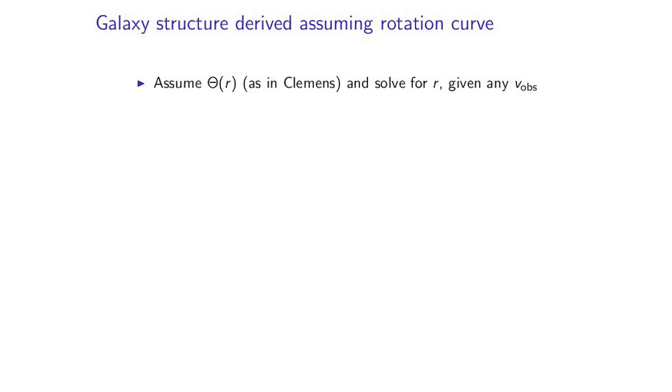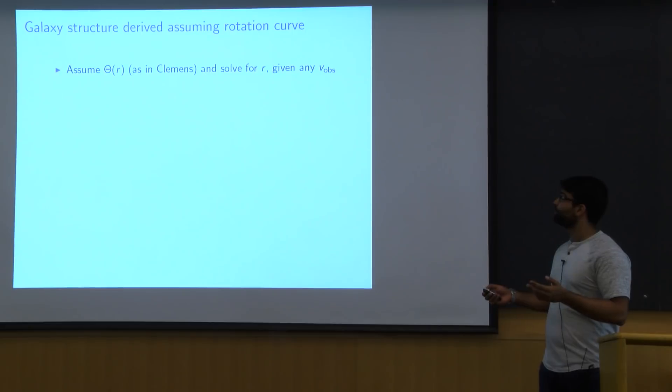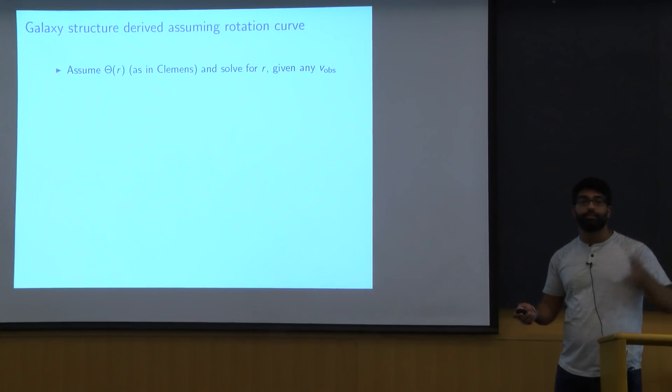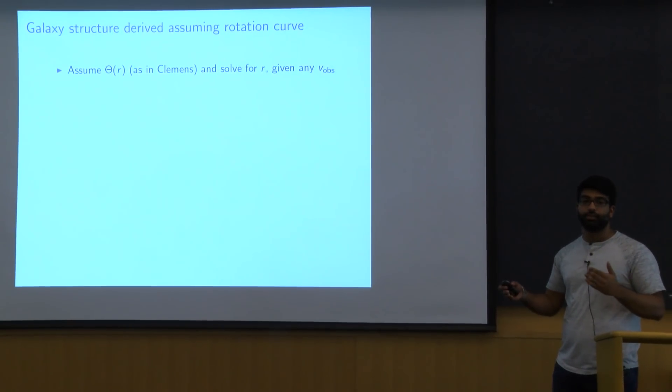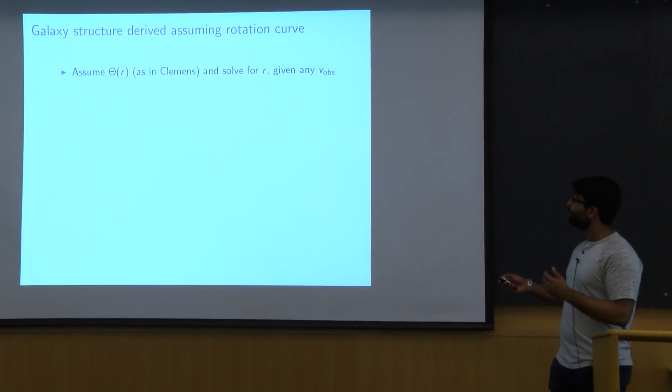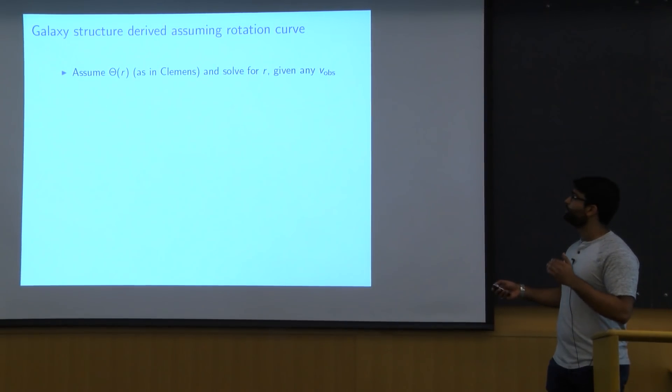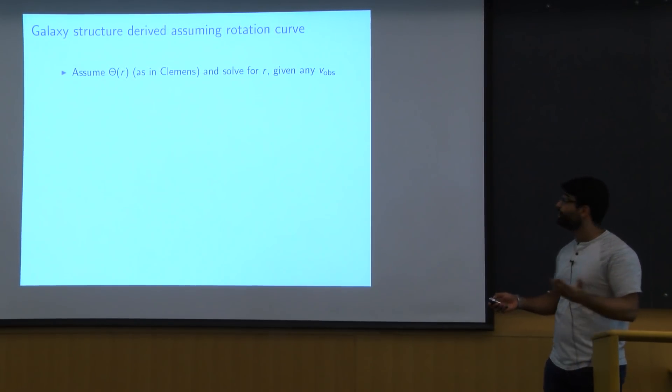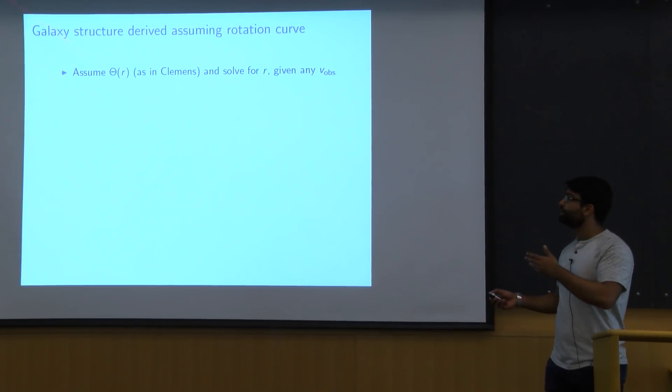So then there's one more thing that we want to try to look at using this 21-centimeter line, and that's going to be the galactic structure of the Milky Way. As we talked about before, we know that the Milky Way has spiral arms. So we're going to try to see if we can look out and find those structures. So in order to do this, we specifically need to assume some sort of galactic rotation curve. So we're going to be working with the one that we found in Clemens. And using the formulas before, we can use this given curve to solve for a specific r given any observed velocity. So now we can associate radii with all the velocities that we see.